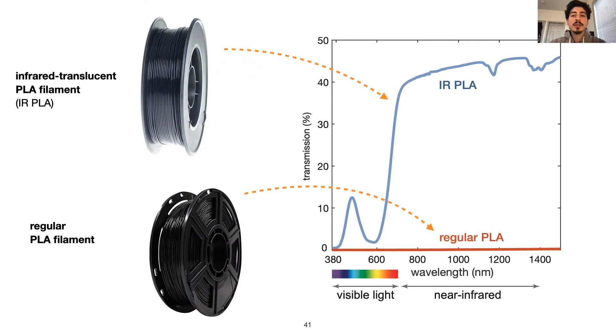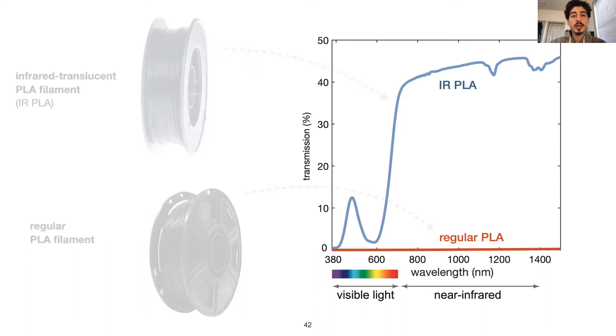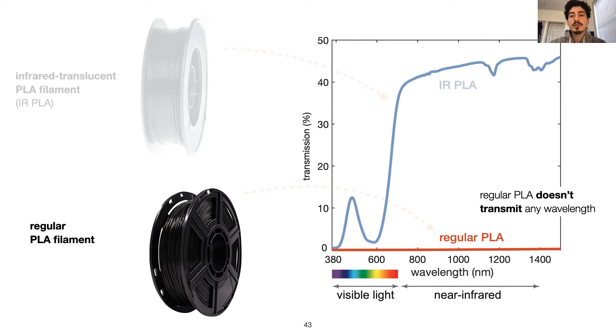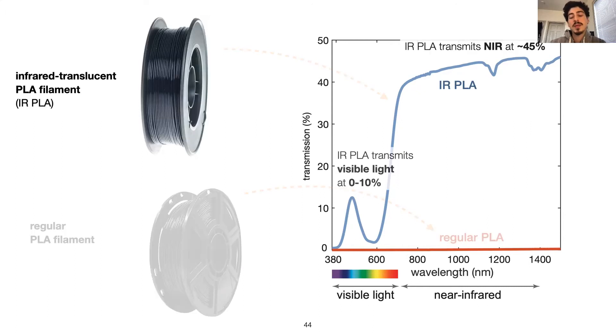We tested how this filament compares to regular PLA filaments and measured the transmission characteristics using a spectrophotometer. Here, the blue curve is for the IR PLA and the orange one is for the regular PLA, each for 1mm samples. Let's have a closer look. On the x-axis, we have the wavelengths including visible light and near-infrared. The y-axis is the transmission percent. For the regular PLA, we see that the transmission is at 0% for all wavelengths, which means that it blocks both visible and near-infrared light. For the special IR PLA, we see that it transmits near-infrared at 45%, while it blocks most of visible light.